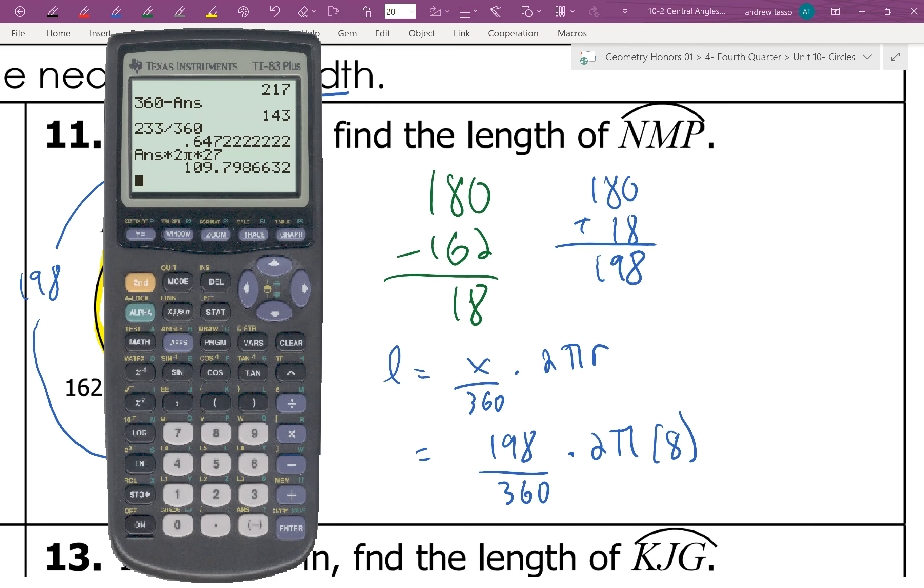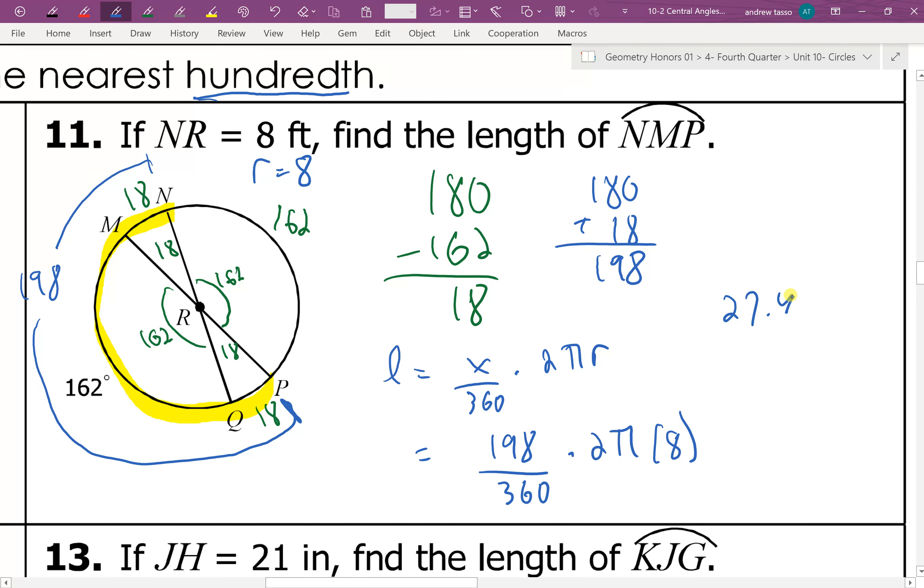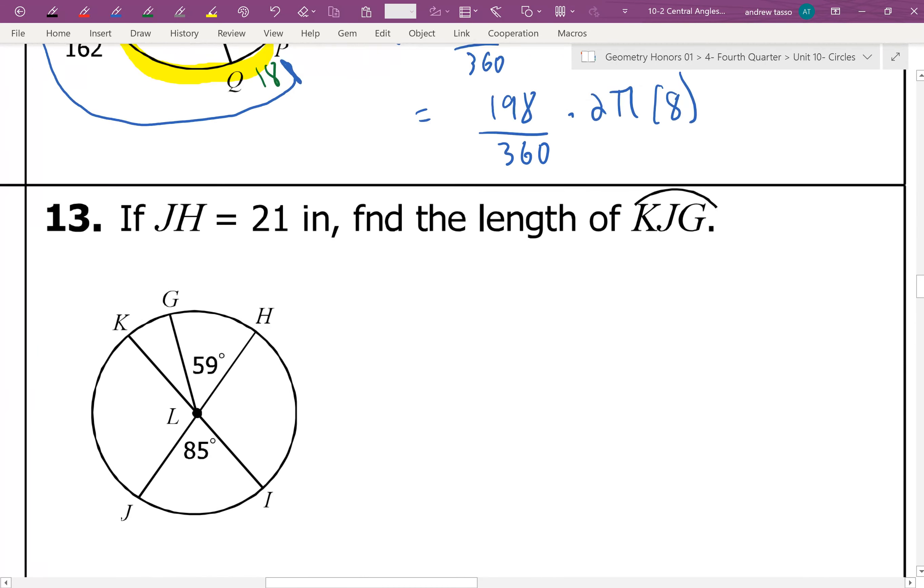So let's plug into the calculator. We have 198 over 360. And then we times that by 2 pi times 8. And you get 27.646. And this 6 tells us to round up. So 27.65.